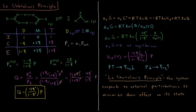This video will discuss Le Chatelier's Principle in Chemical Equilibrium. To discuss this concept, let's look at the following reaction. We have a formic acid dimer, where two formic acid molecules are associated and hydrogen bonded to one another — strong enough that we consider this a single chemical species in the gas phase. This is in equilibrium with the dissociated quantity: two molecules of the formic acid monomer in the gas phase.